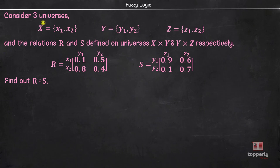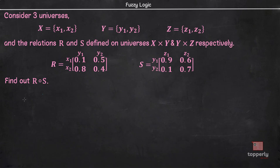Let us see an example to understand the concept better. Consider three universes X, Y, and Z, and the relations R and S defined in the universes X×Y and Y×Z respectively. We are asked to find out R Composition S. Let us first find out the Max-Min Composition.